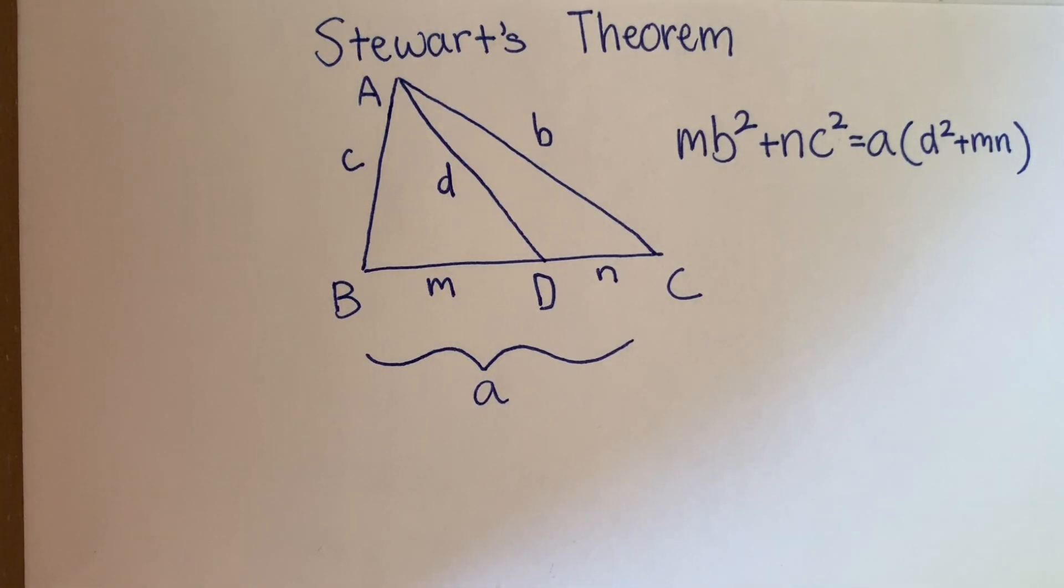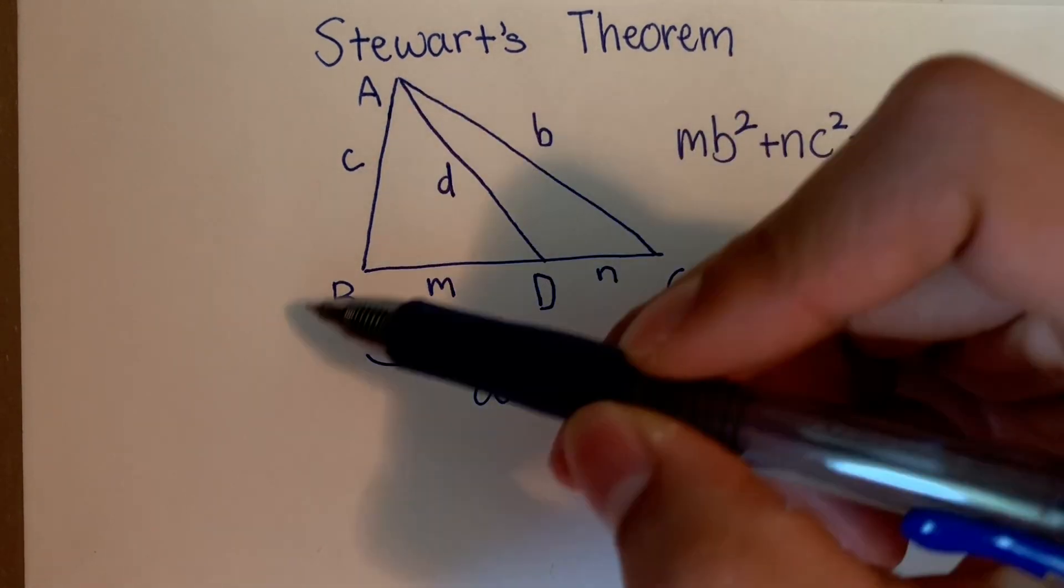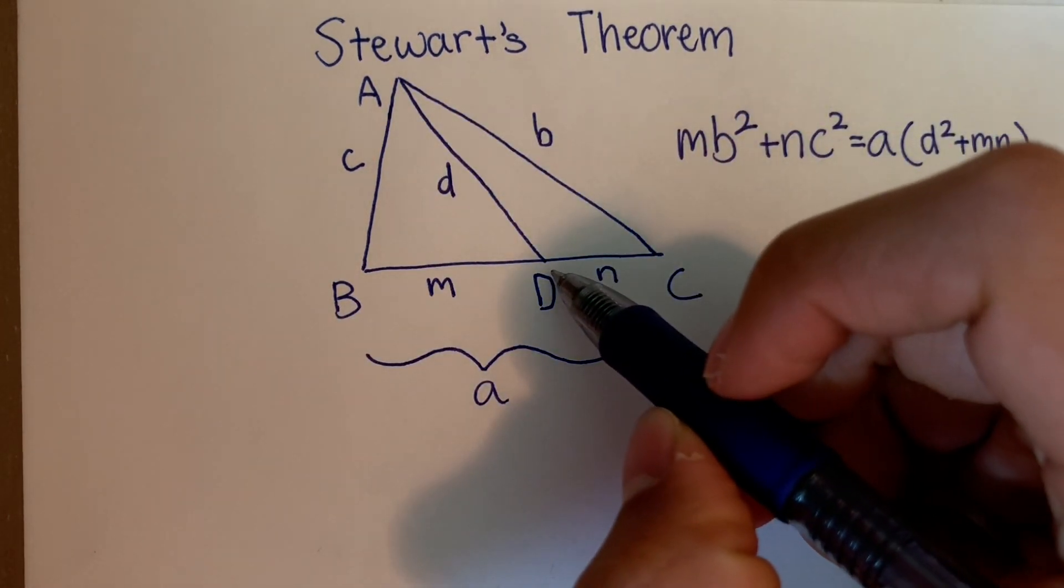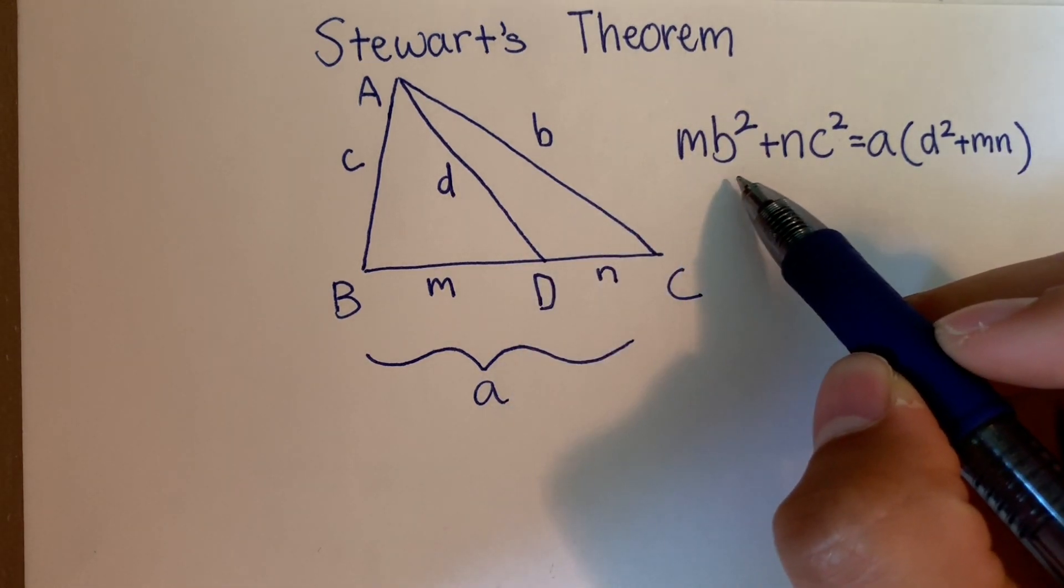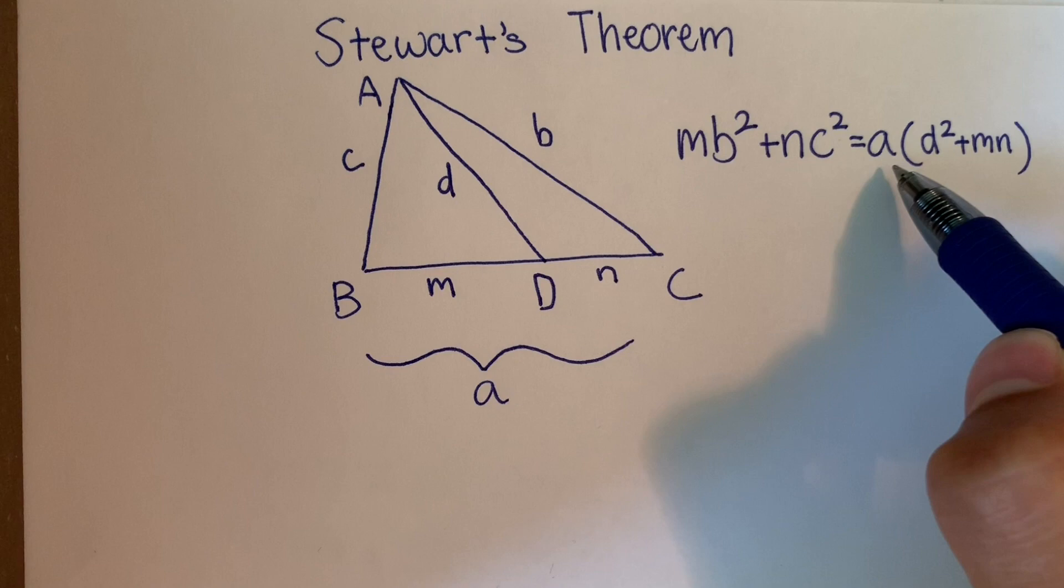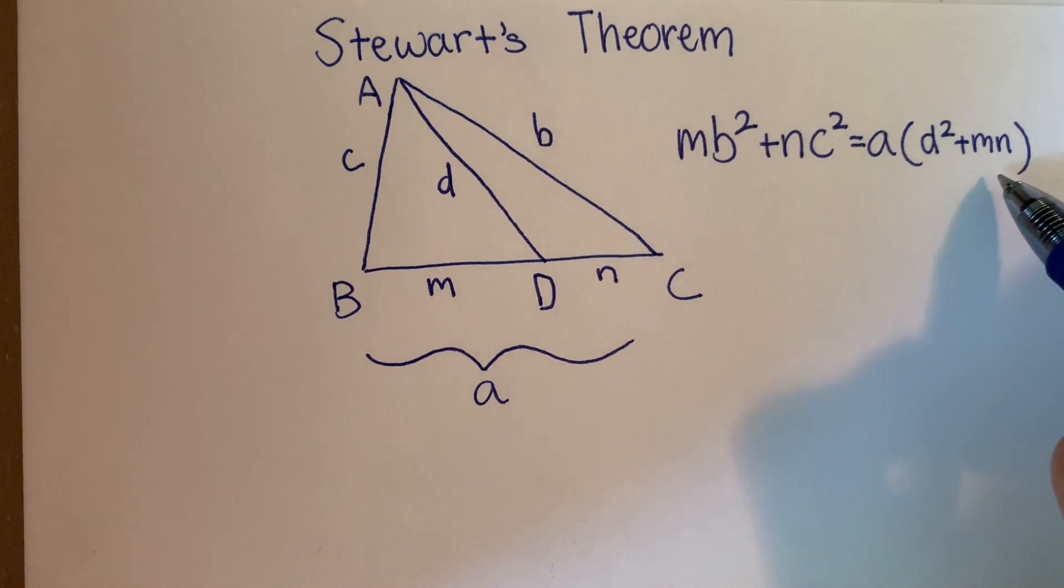Hello. In this video, I'll be going over the proof for Stewart's Theorem. So what Stewart's Theorem tells us is that in triangle ABC for point D on side BC, we have M times B squared plus N times C squared equals A times D squared plus MN.